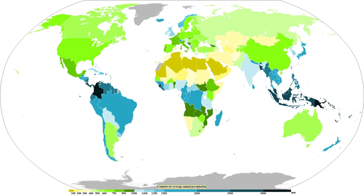Extratropical cyclones can bring cold and dangerous conditions with heavy rain and snow, with winds exceeding 119 km/h, sometimes referred to as windstorms in Europe. The band of precipitation associated with their warm front is often extensive, forced by weak upward vertical motion of air over the frontal boundary, which condenses as it cools and produces precipitation within an elongated, wide stratiform band falling out of nimbostratus clouds. When moist air tries to dislodge an Arctic air mass, overrunning snow can result within the poleward side of the elongated precipitation band.